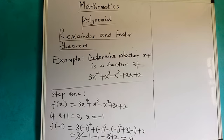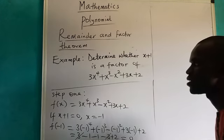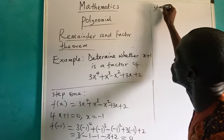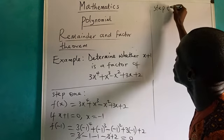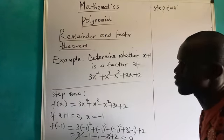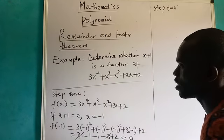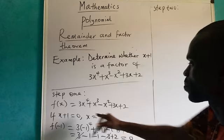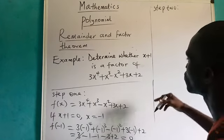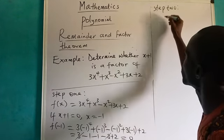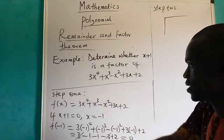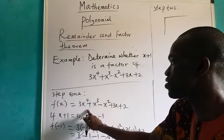The other step is step two. Remember I told you there are two steps required. I will now use the long division method. The polynomial will be inside and this expression will divide it. Let me see if the result will also be zero, because we are supposed to have the same result.